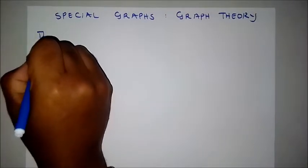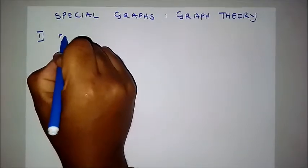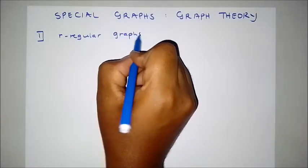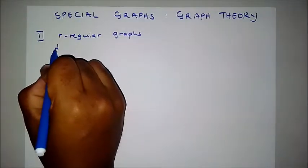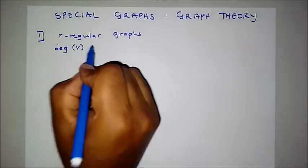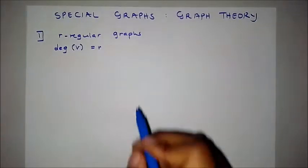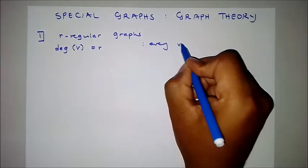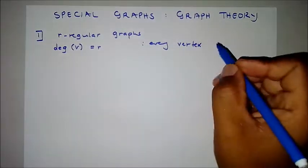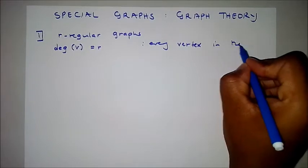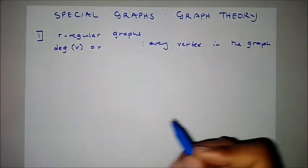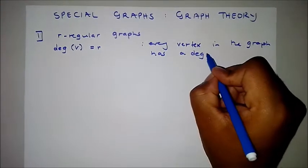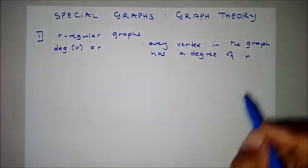Firstly, we've got graphs that are called r-regular graphs. These are the types of graphs where all vertices have a degree of r. For r-regular graphs, these are graphs where every vertex in the graph has a degree of r.